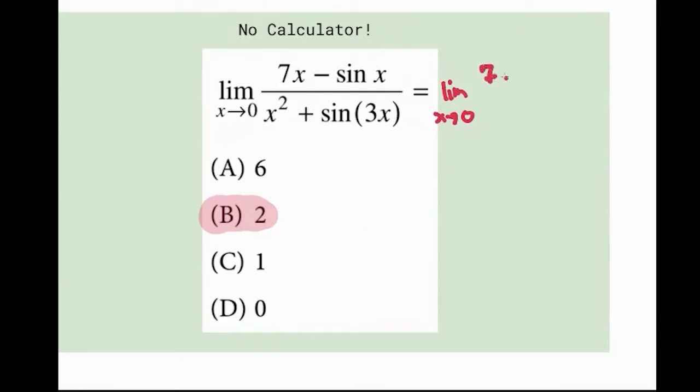We're going to do the derivative of the top. So it's going to be 7 minus cosine X. And this is going to be divided by 2X plus 3 cosine 3X.